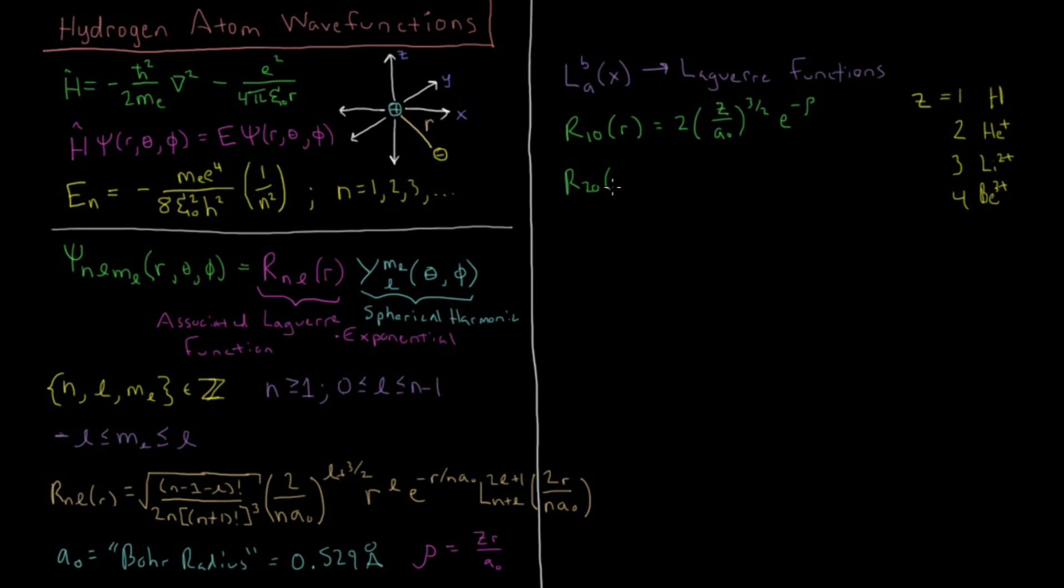So then we can go to n equals 2, l equals 0. And for that one, we'll see z over 2a0, again to the 3 halves, times the polynomial 2 minus rho, times e to the minus rho over 2. So you see a faster decaying exponent, and you also see a 2 minus rho here. So there's going to be a point at where this function equals 0 before infinity, and that's going to give us what we call a radial node. And for n equals 2, we can also have l equals 1. So we can have r of 2, 1. And that value would be 1 over square root of 3 times z over 2a0 to the 3 halves, rho e to the minus rho over 2.